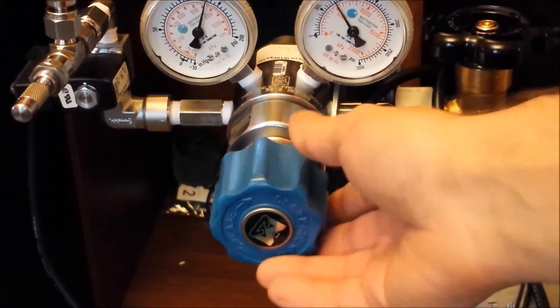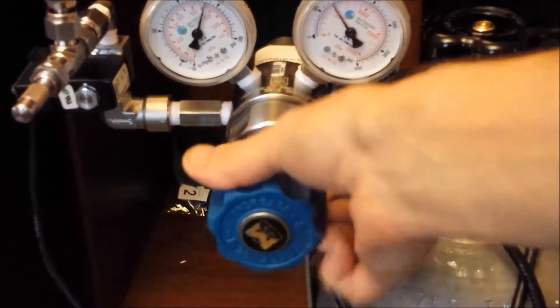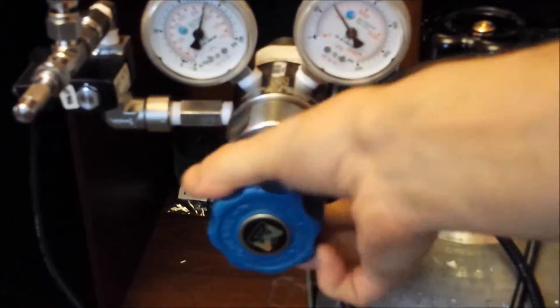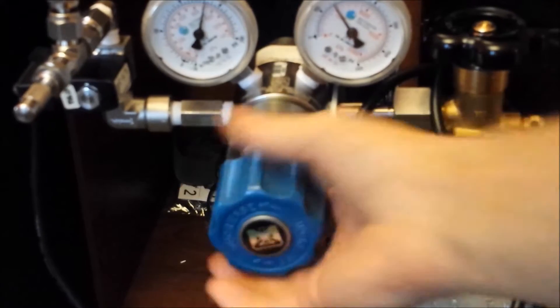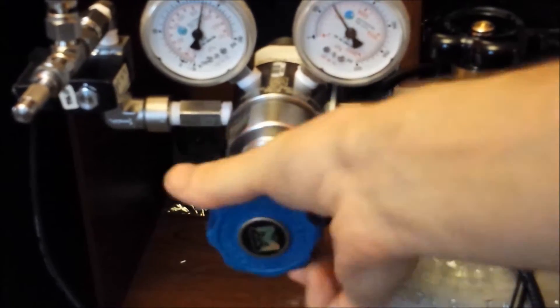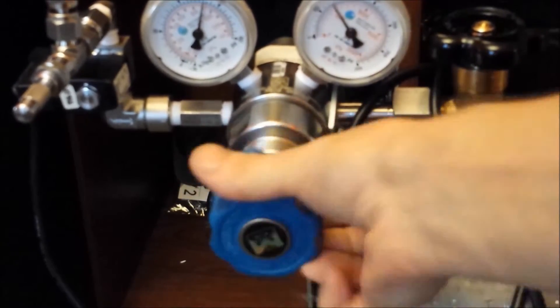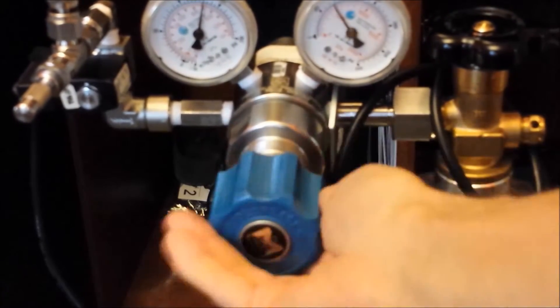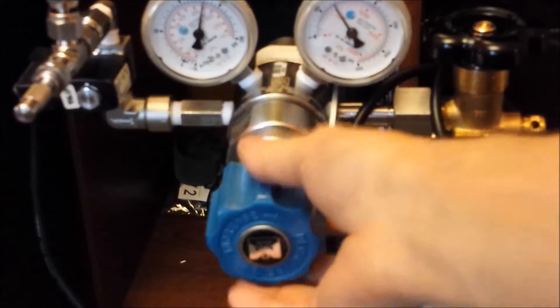Now you'll go ahead and turn the regulator handle all the way counterclockwise until it's completely loose. Now you want to make sure that CO2 tank is completely closed because you're about to disconnect the regulator from the tank. The idea here is to isolate the CO2 in the second stage of your dual stage regulator.